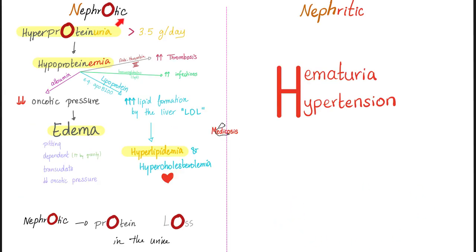When you have nephrotic syndrome, there will be high protein in the urea, low protein in the blood, edema, and hyperlipidemia. When it comes to nephritic — itis means inflammation, the kidney is inflamed. What's gonna happen? Blood in the urine. High blood pressure. Hematuria and hypertension. Don't forget these.